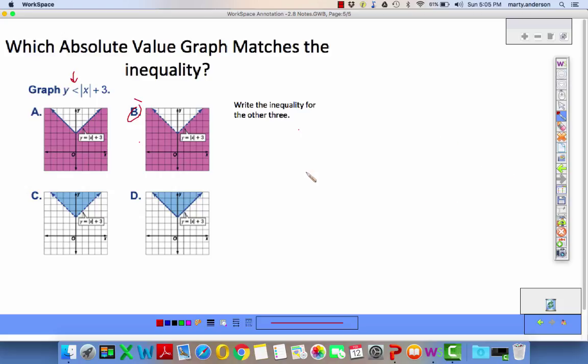Write the three other inequalities. A looks like it's shading below and solid: y is less than or equal to the absolute value of x plus 3. C is dotted and shaded above, so it's y is greater than. And D is solid, so it's greater than or equal to.